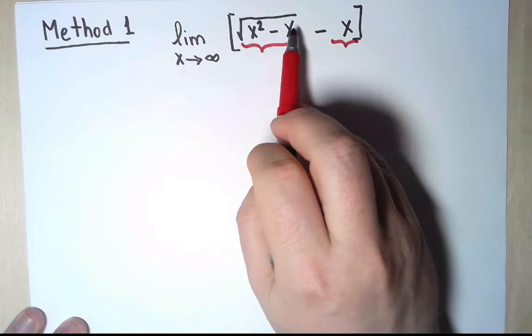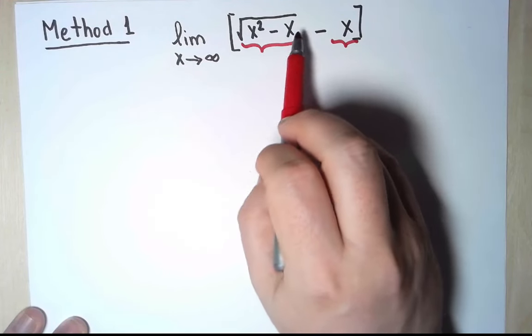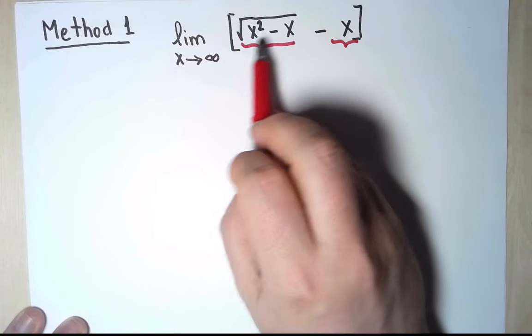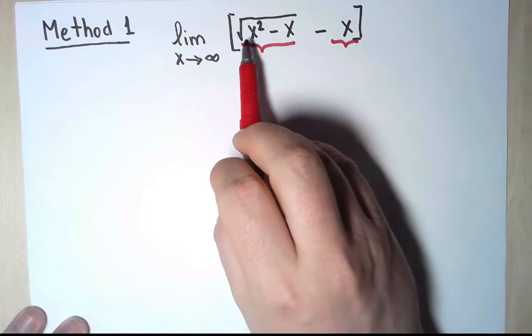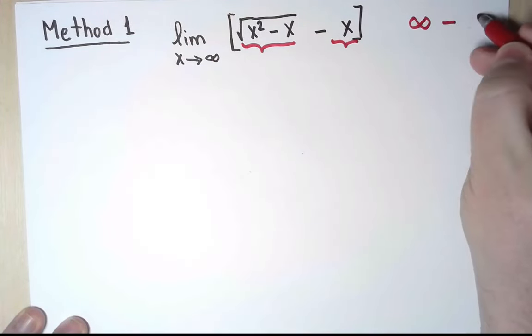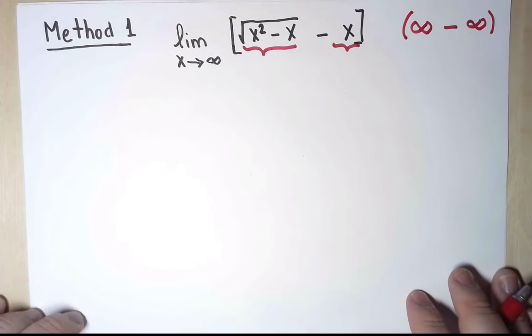Inside the square root, I have a polynomial. So we know for a polynomial, the only thing that matters is the term with the largest exponent. So the limit of this polynomial, as x approaches infinity, is infinity, because the leading coefficient is positive, and the square root doesn't change that. So the limit of this part is infinity, and the limit of this part is also infinity. So I have infinity minus infinity, and that is an indeterminate form.